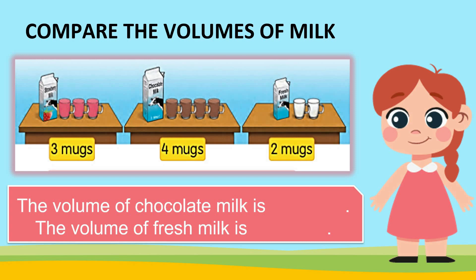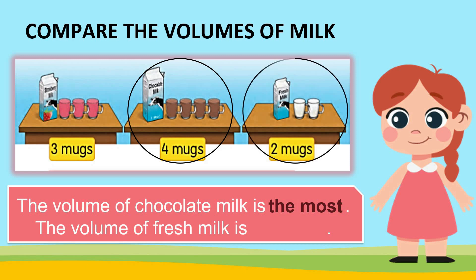Let's compare the volumes of milk. We can fill the strawberry milk into three mugs. We can fill the chocolate milk into four mugs. We can fill the fresh milk into two mugs. The volume of chocolate milk is the most, and the volume of fresh milk is the least.